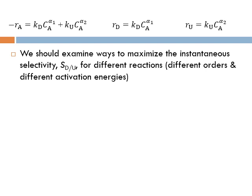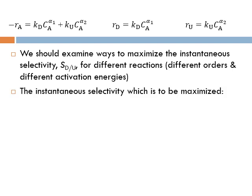We should examine ways to maximize the instantaneous selectivity. If you want to maximize the production of D, you need to find ways to maximize the overall selectivity. The instantaneous selectivity S_D/U to be maximized equals r_D / r_U, and since we know the rate laws, we write the ratio as (k_D / k_U) × C_A^(α1 - α2).